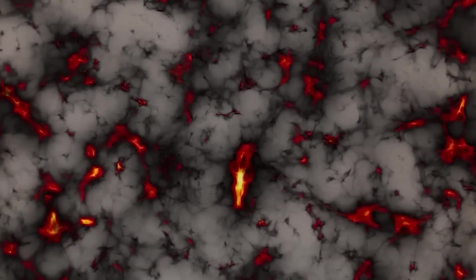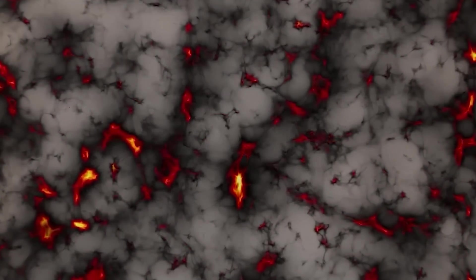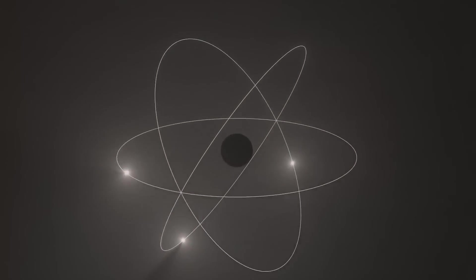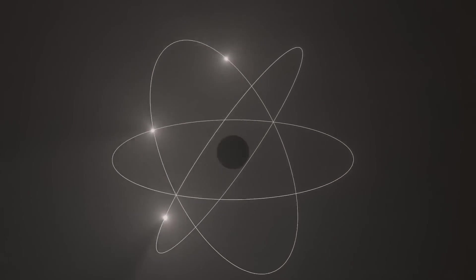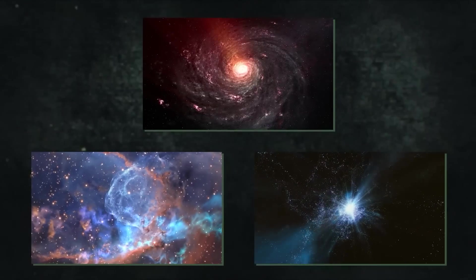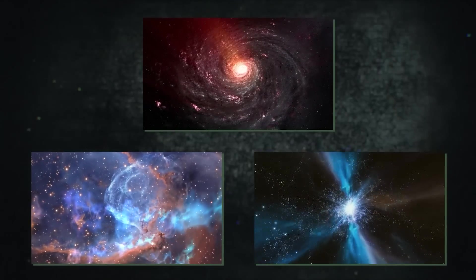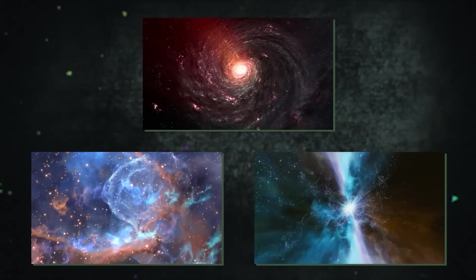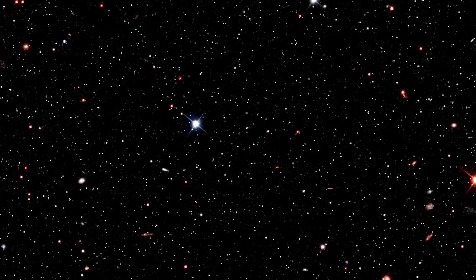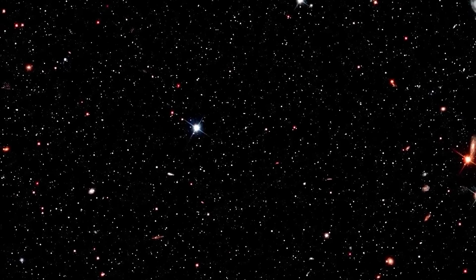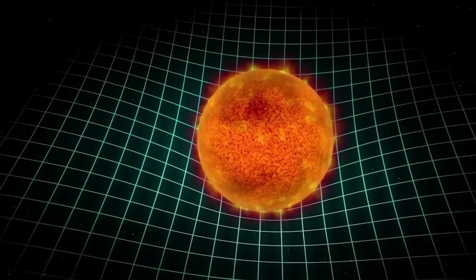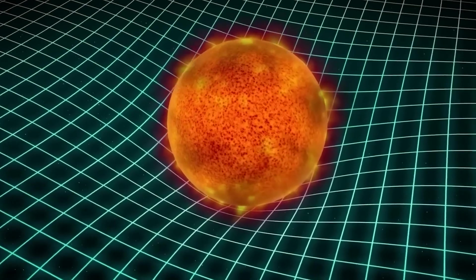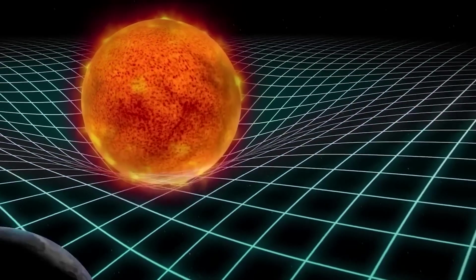Since that time, the idea of dark matter has evolved into a cornerstone of our knowledge of the cosmos. It is believed to be in charge of the universe's structure, galaxy formation, and the spread of cosmic microwave background radiation. Observations of galaxy rotation curves, gravitational lensing, and cosmic microwave background radiation are only a few examples of evidence for dark matter.